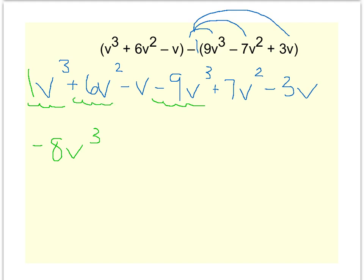Now I have a positive 6v² and a positive 7v². Well, six plus seven is thirteen, so I have a positive 13v².